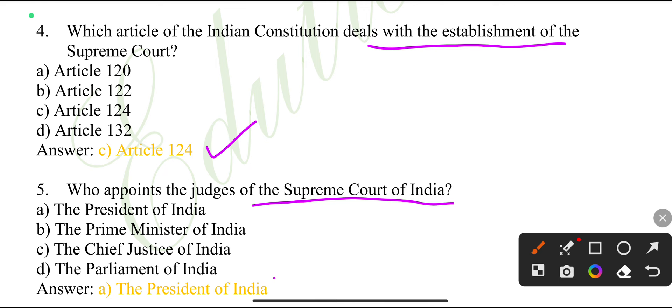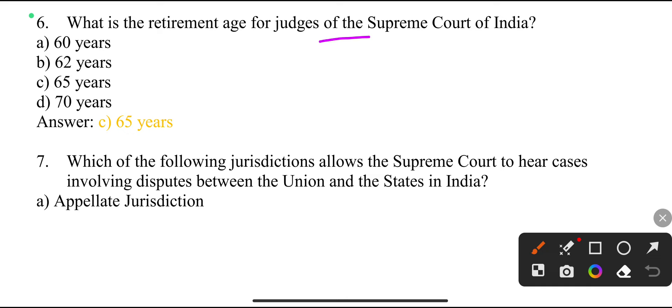Who appoints the judges of the Supreme Court of India? The President of India. What is the retirement age of a judge of the Supreme Court of India? 65 years.